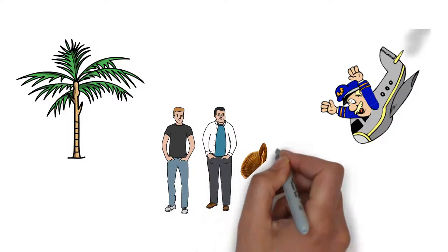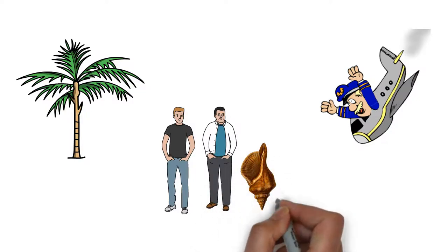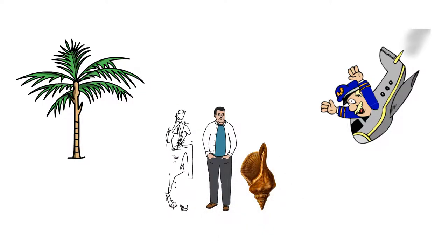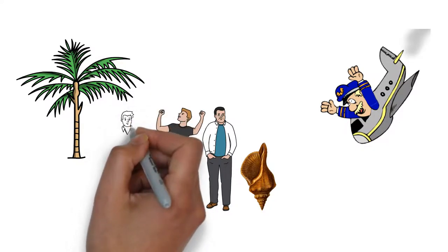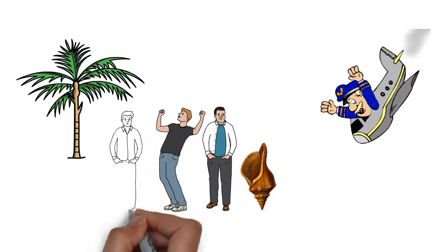Once they've gathered, the boys decide to choose a leader and to think of a way to be rescued. They pick Ralph to be their leader, and Ralph picks Jack to lead the boys who will be hunting for food for the rest of the group.